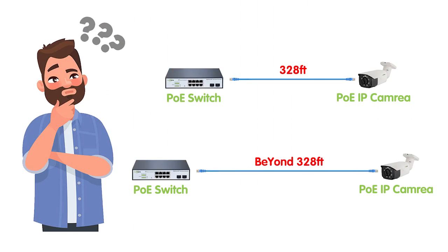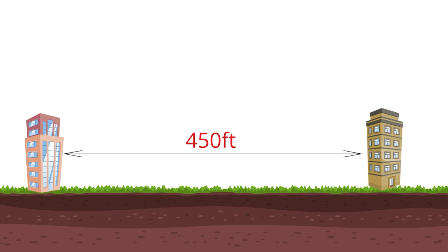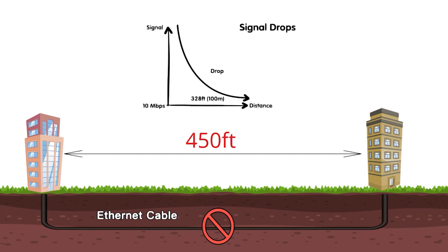Hi there. Pulling networks between two buildings is not that difficult, but sometimes it could be a challenge when the distance is beyond 328 feet. Today we received a case from one of our customers. The customer wants to set up a network link between two buildings, and the distance is about 450 feet. He can't pull a continuous run network cable because the network signal will start dropping after 328 feet.